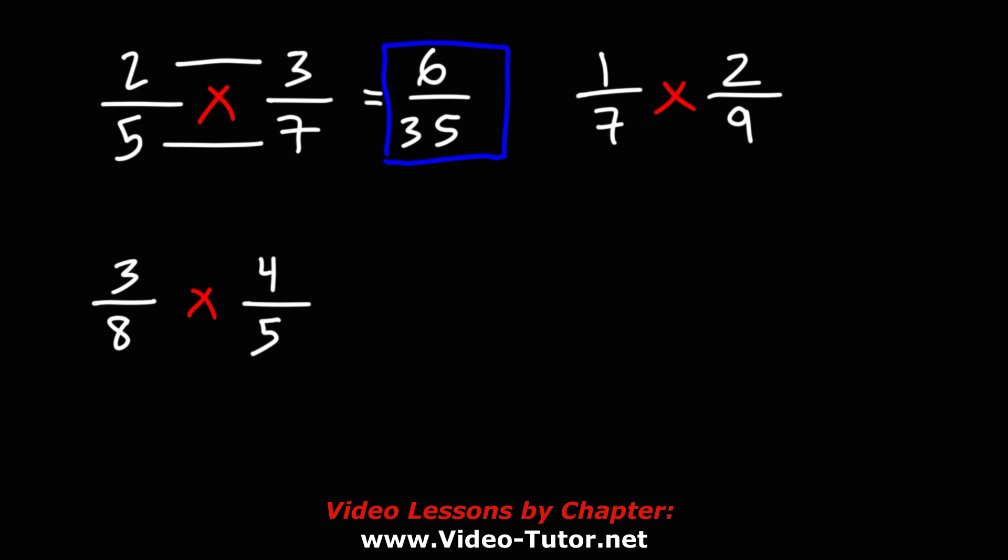Now, let's move on to the next example. We just got to multiply across. 1 times 2 is 2. 7 times 9 is 63. So the answer is going to be 2 over 63.